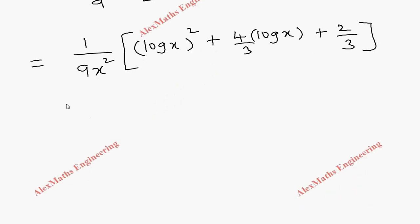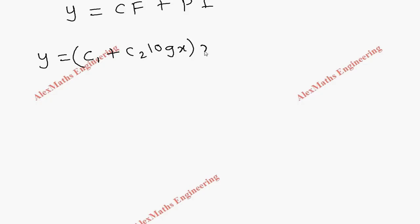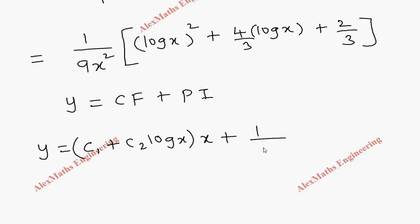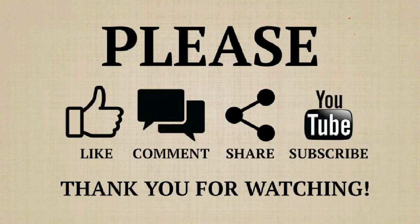Now we write the complete solution: y equals CF plus PI. So y equals (c1 plus c2·log x)·x, plus (1/9x²)·[(log x)² plus (4/3)·log x plus 2/3].